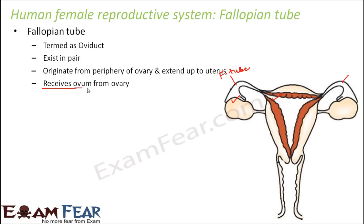The main purpose of the fallopian tube is to receive the ovum from the ovary. The ovary is the one which releases the ovum — the egg. So the fallopian tube receives the egg from the ovary and then allows it to pass through the fallopian tube to finally reach the uterus. That is the main purpose of the fallopian tube.